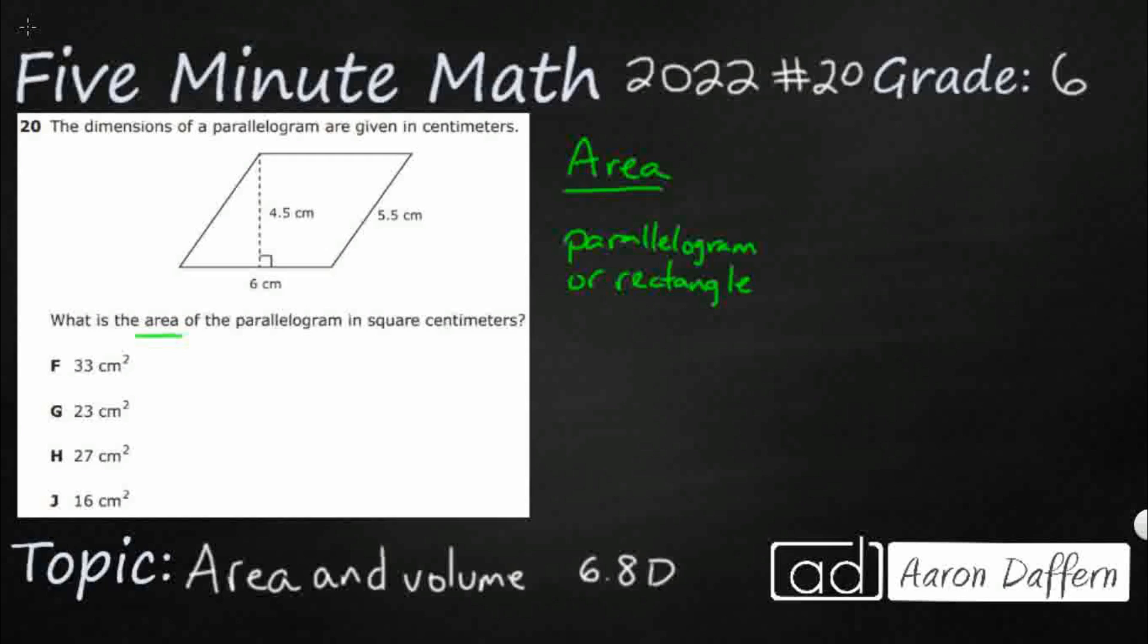So, either one of those, parallelogram or rectangle, actually has the exact same formula, BH. So, this is your base, and this is your height. So, the first step is to find the formula on the mathematics chart if you don't have it memorized.